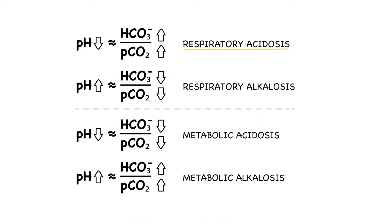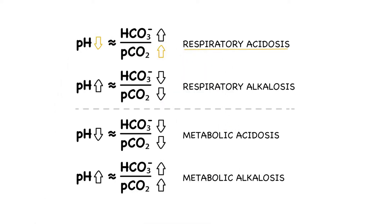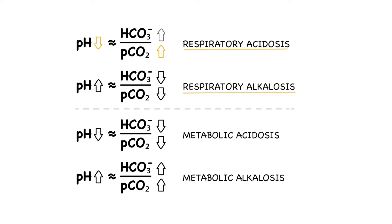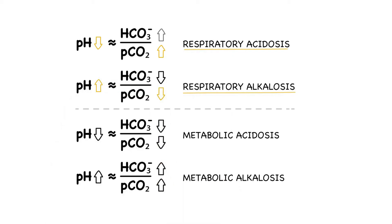In respiratory acidosis, PCO2 is elevated, which causes pH to fall. As a reaction to that, bicarb will also be elevated. In respiratory alkalosis, on the other hand, PCO2 falls and pH rises, which will then also cause the bicarb to fall.